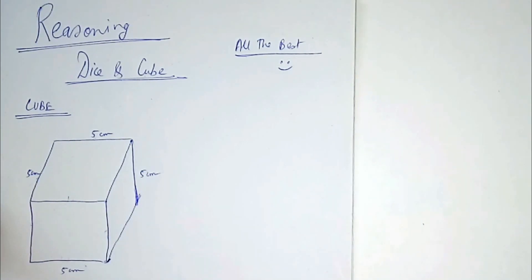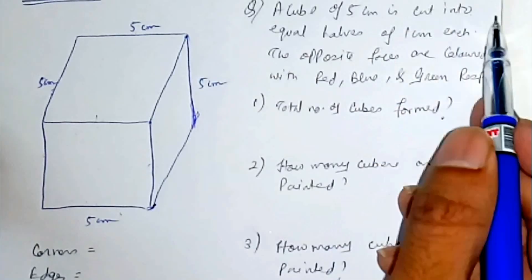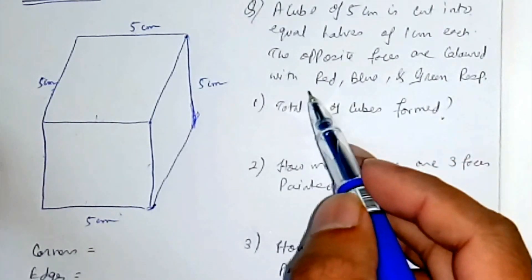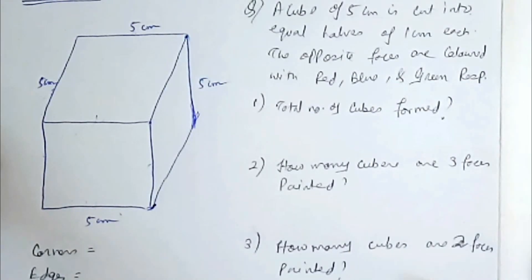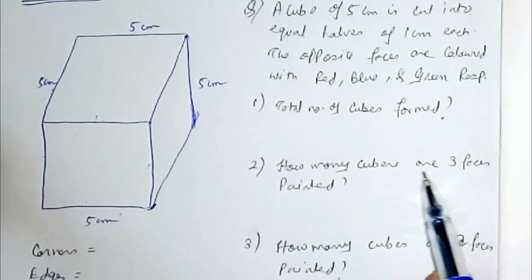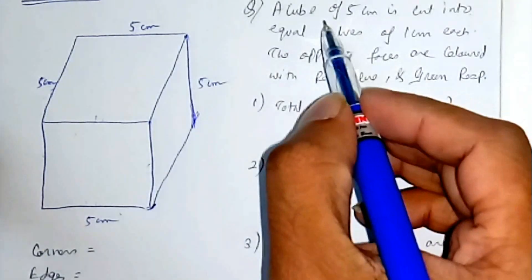We will be dealing with only cubes. The type of questions that generally come from this chapter are: a cube of 5 centimeters is cut into equal halves of 1 centimeter each, the opposite faces are colored with red, blue, and green respectively — and you need to find the total number of cubes formed, or how many cubes will have three faces painted.